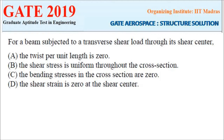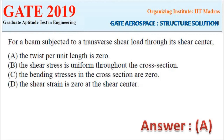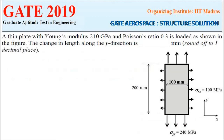For a beam subjected to a transverse shear load through its shear center, among the options — twist per unit length is zero; shear stress is uniform throughout; bending stress is zero; shear strain is zero at shear center — the correct answer is: twist per unit length is zero. Loading through the shear center produces no twisting. Option A is correct.